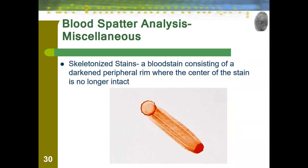Then we have skeletonized stains — a bloodstain consisting of a darkened peripheral rim where the center of the stain is no longer intact. Blood dries from the outside inward because the outside of a blood droplet is the thinnest part and the inside is the thickest. So if blood dries for a little bit and then someone tries to clean it up, or moves through it such as through a wipe, you often get these skeletonized stains.